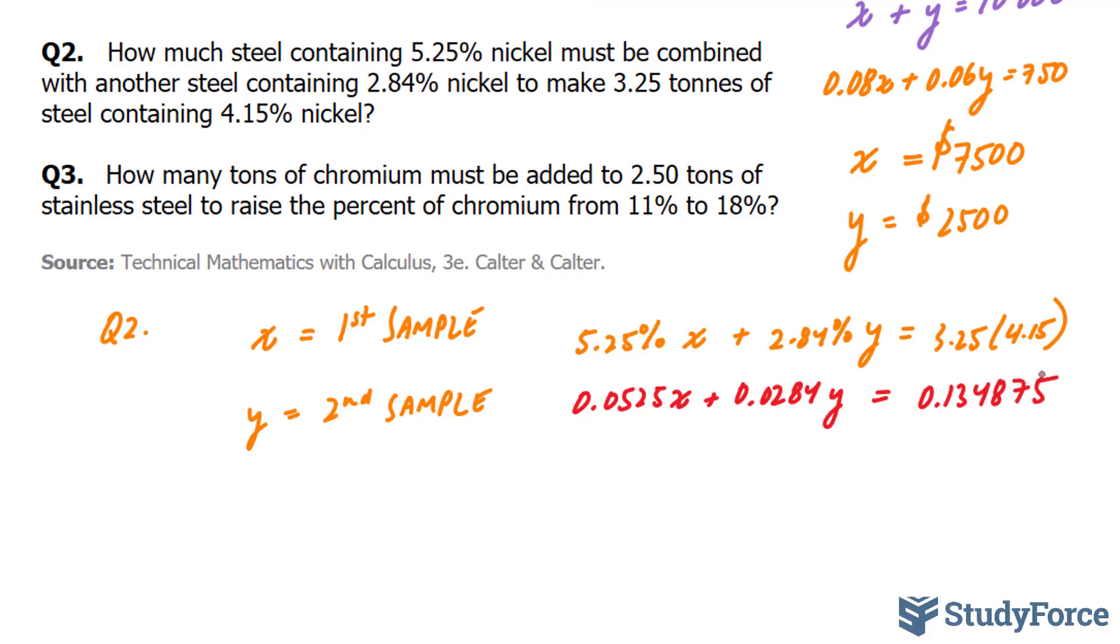And our second equation will be the two samples added together. X plus Y is equal to the mass of 3.25 tons. Now, we need to solve for X and Y. This is a linear system with two unknowns. If you do this correctly, you should end up with the following values. 1.77 tons at 5.25% and 1.48 at 2.84%.